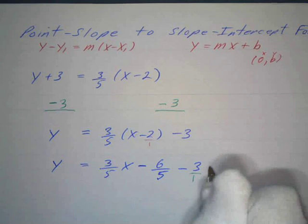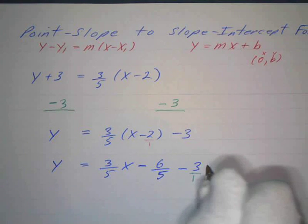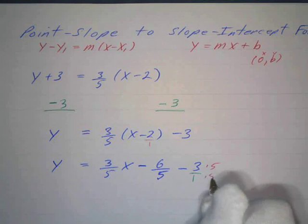So I multiply the top and the bottom by 5, by 5, so I can get a 5 in the denominator.